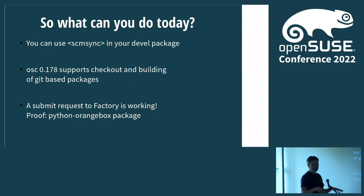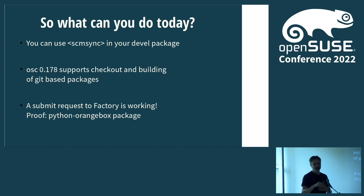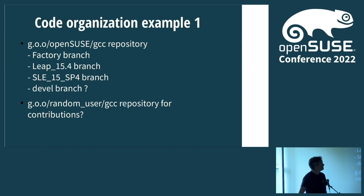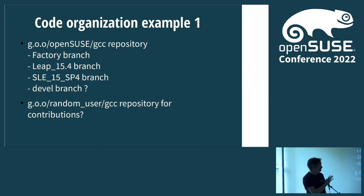When you submit it using osc submit requests, you need to specify the target. Once it's in Factory, all information about the Git tree is actually lost because it's been turned into a classic OBS cpio archive internally. However, you can work with your package in Git, your contributors can work there, and you can submit it — that's the positive part. No one stops you from doing that at the moment, and the mentioned package is just proof that it works.